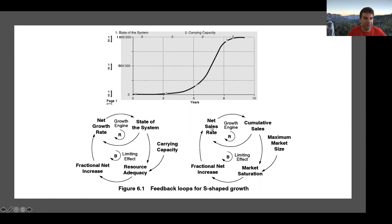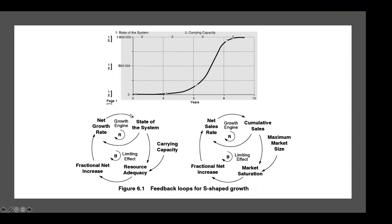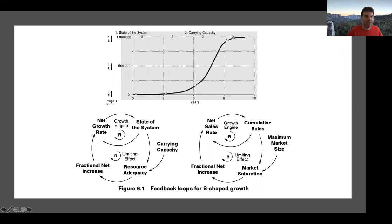More generally, on the left-hand side, whenever we see S-shaped growth we have a generic growth engine driving everything, but ultimately when things get so big there's a limiting factor, and some carrying capacity parameter determines when that limiting effect kicks in. Ideally whenever we have S-shaped growth in a system, we'd like to draw it so that reinforcing loops and balancing loops are clearly identifiable — once we can identify those, it'll be easy to see the limiting processes.